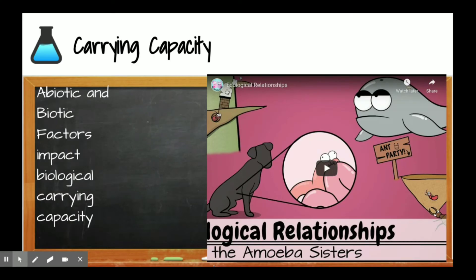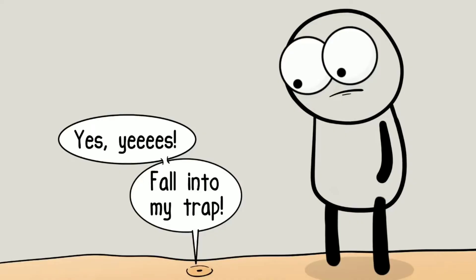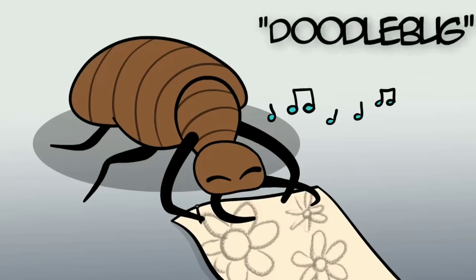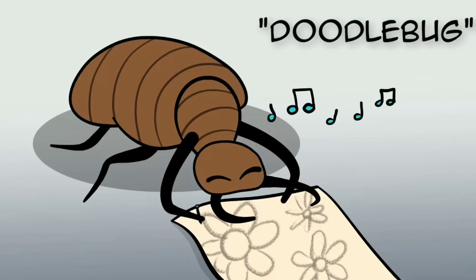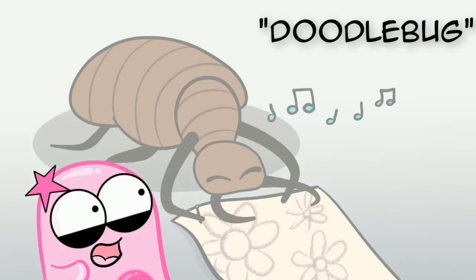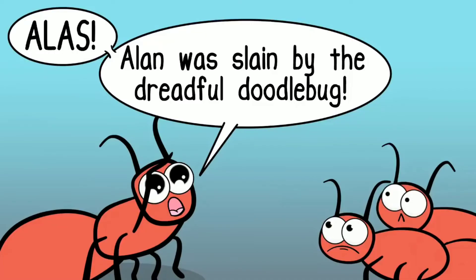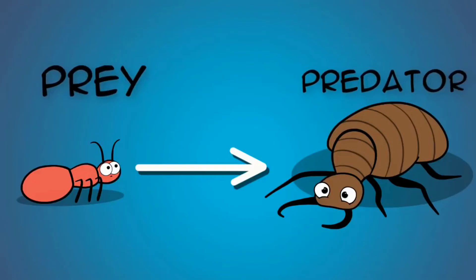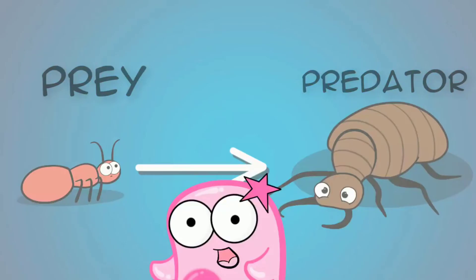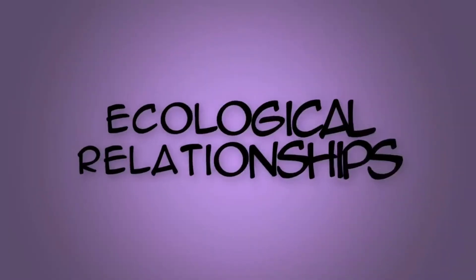Those antlions are mean. They throw sand in your face? Man. Thankfully, antlions are small. In fact, doodlebug is evidently another name for these things. I'm not exactly sure how you go from antlion to doodlebug, but okay. It's all relative. They're bad news for an ant because the antlion is a predator of the ant. The ant is their prey. That's an ecological relationship right there. And that's what we're going to talk about. Ecological relationships.